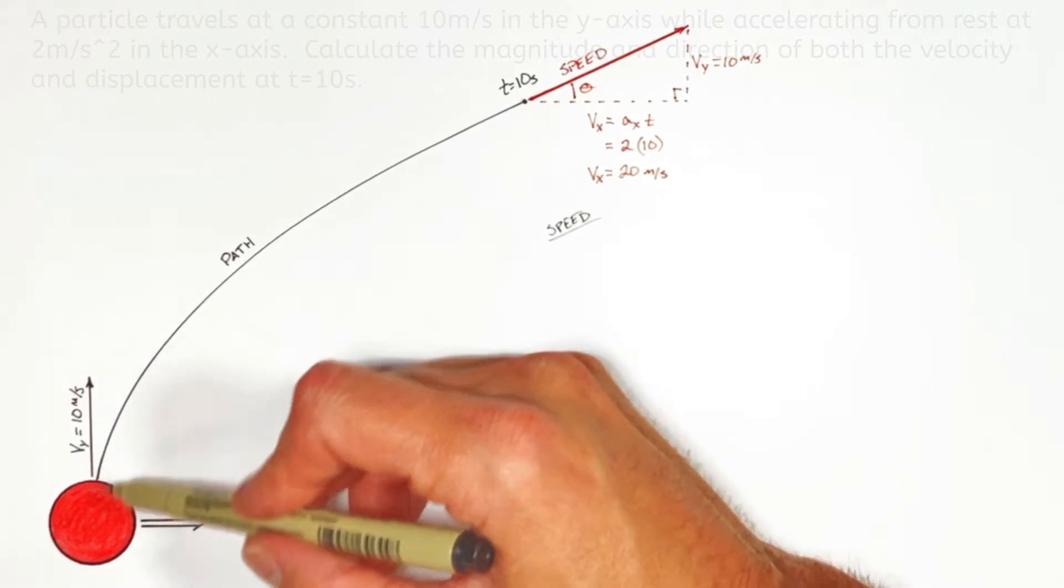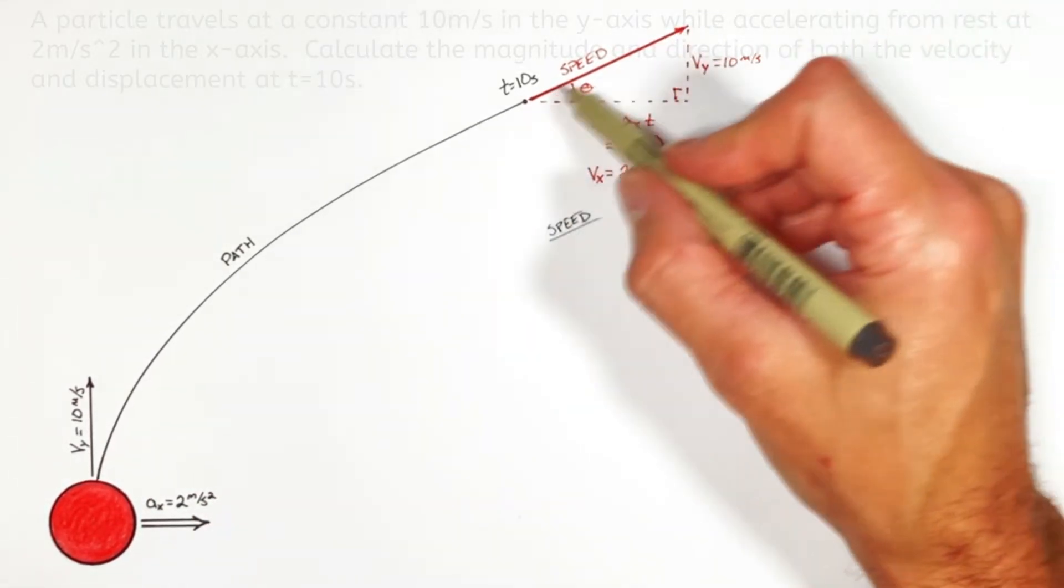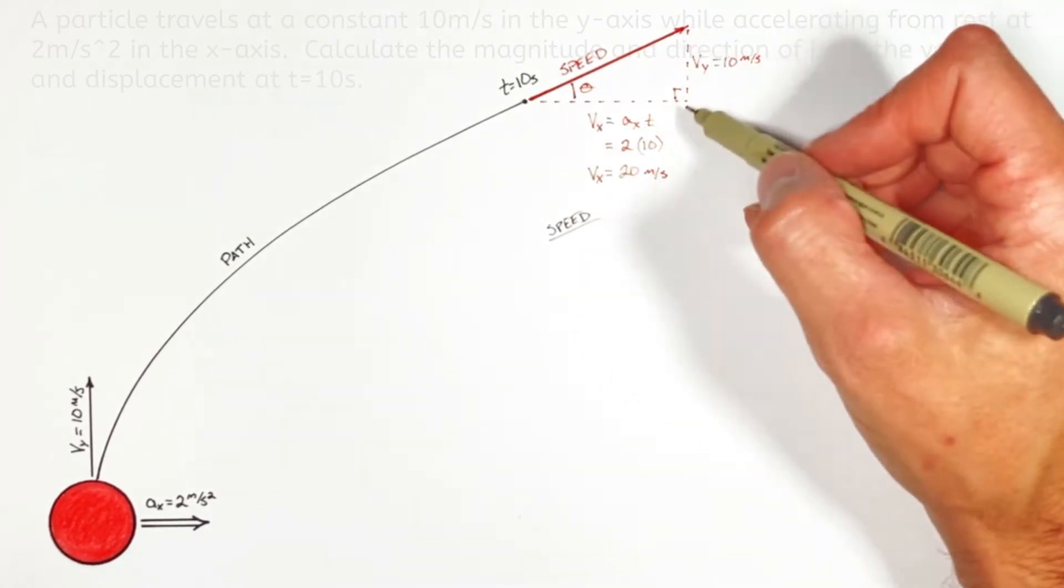Now despite the fact we're talking about a ball which is moving in two axes and accelerating in one of them, realize this is nothing other than a right triangle and our speed is nothing other than the hypotenuse of that triangle.